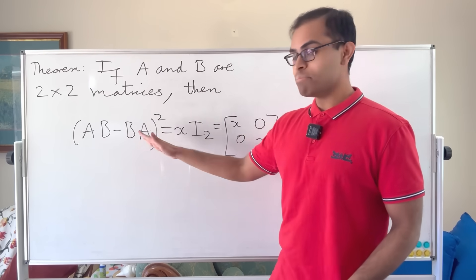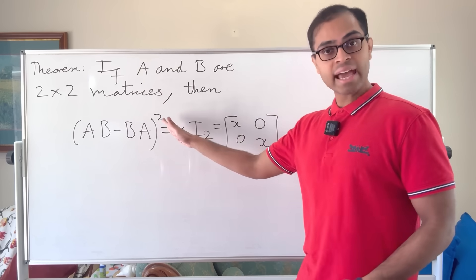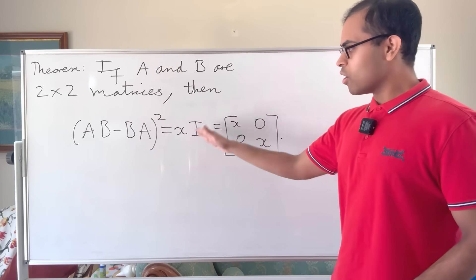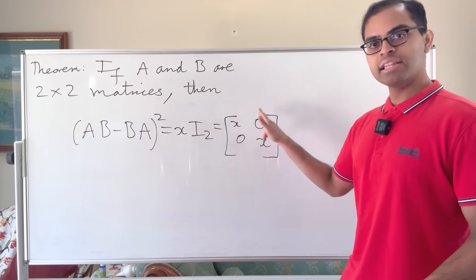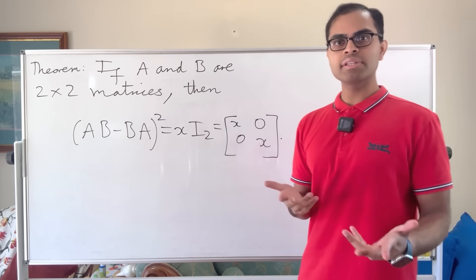and you take AB minus BA and you square that, that's always going to be a constant times the identity matrix. So it's going to have the same number on the diagonal and zeros off the diagonal. How cool is that?